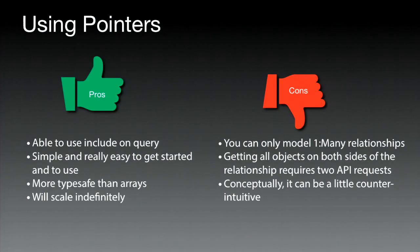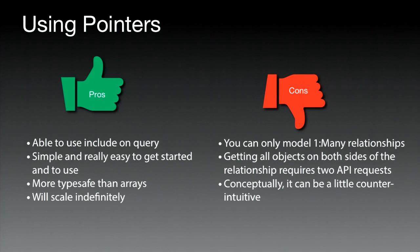There are pros and cons to using pointers. A pro is you can use an include command on the query. Another pro is that it's really simple and easy to get started — you're already using pointers from the Parse quick start, so it's a natural segue. They're also type safe: when you create a pointer column in your table, it points to a specific type, so you can only save that type to that column, which is useful when working in large teams.